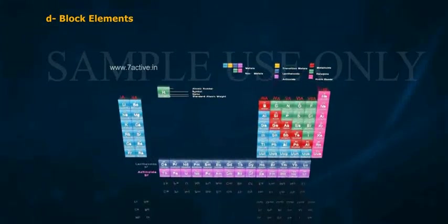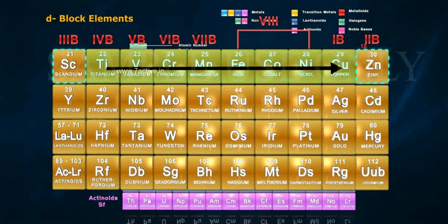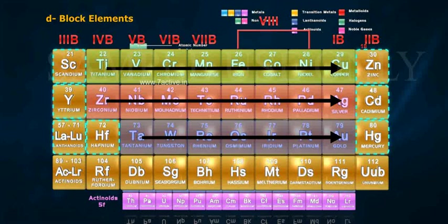3D series elements are Scandium, Z equals 21 to Zinc, Z equals 30. 4D series elements are Yttrium, Z equals 39 to Cadmium, Z equals 48. And 5D series elements are Lanthanum, Z equals 57, Hafnium, Z equals 72 to Mercury, Z equals 80.